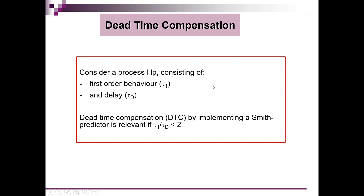For dead time compensation you have to consider a process consisting of at least a first order behavior with the dominant time constant tau1 and the delay time tauD. Dead time compensation, also called DTC, using a Smith predictor is relevant if the ratio between that dominant time constant tau1 and the delay time tauD is equal to 2 or smaller than 2. That is the precondition for using a Smith predictor — or in words, when the delay time is relevant with respect to that first order time constant tau1.